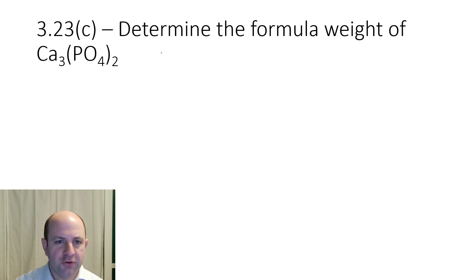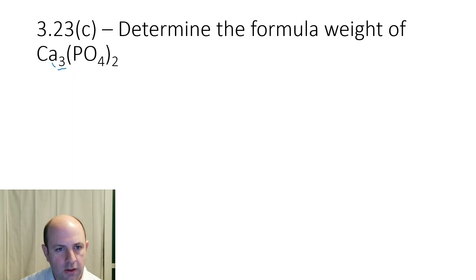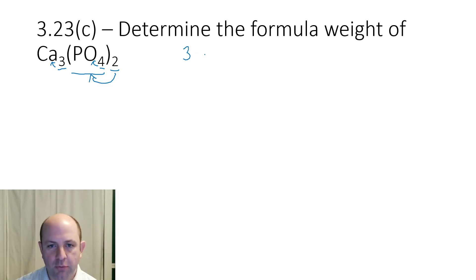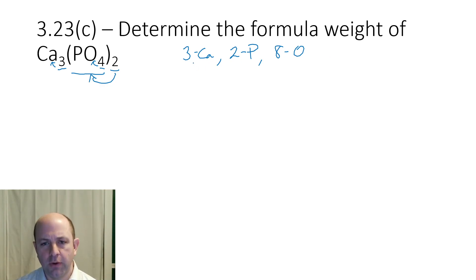The first one is Problem 3.23C, where it wants us to determine the formula weight of calcium phosphate. I picked this one because it's got parentheses and a polyatomic. The key is to make sure we know what the numbers apply to. The 3 applies directly to the calcium, the 4 applies just to the oxygen, but the 2 applies to the whole phosphate. So we will have 3 calciums, 2 phosphorus atoms, and 8 oxygen atoms — and that's what we need to add up.